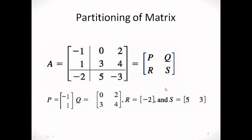A matrix can be partitioned in a number of ways. In this example, the original matrix A is a 3×3 matrix, but it has been partitioned such that the new matrix is a 2×2 matrix of sub-matrices, where P equals [-1, 1] (a 2×1), Q is a 2×2 matrix [0, 2; 3, 4], R is the single element -2, and S is [5, -3].